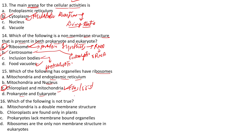Question 16: Which of the following is not true? A: Mitochondria is a double membrane structure. B: Chloroplasts are found only in plants. C: Prokaryotes lack membrane-bound organelles. D: Ribosomes are the only non-membrane structures in eukaryotes. The answer is D — this is not true because apart from ribosomes, you also find centrosomes in eukaryotes, which are also non-membrane structures that help with cell division. Hence D is our right answer.